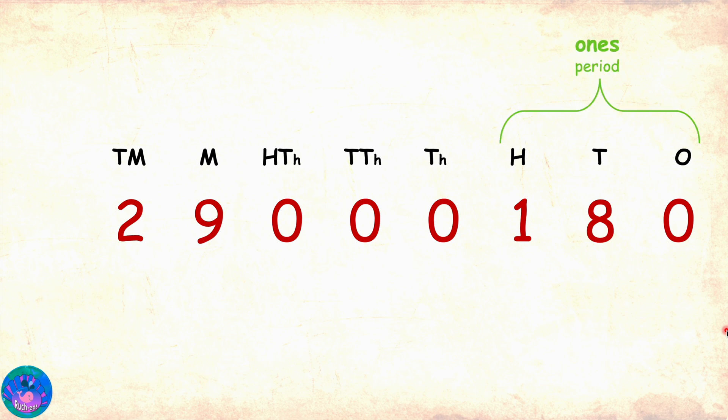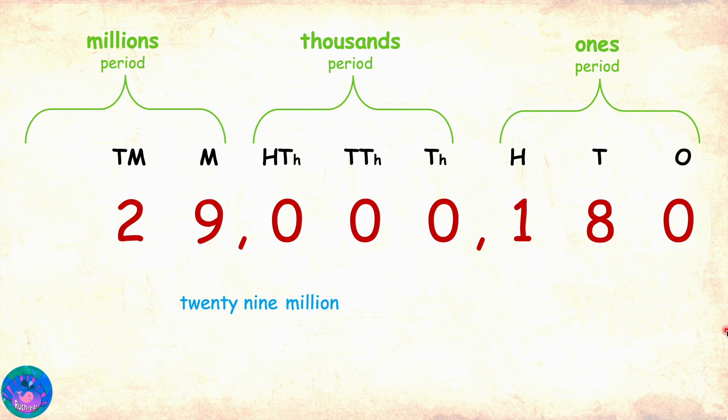So, here are the places. Ones through ten millions. Then, dividing into periods. Ones, thousands and millions. Putting comma between the periods. This number is twenty-nine million. Now, there are only zeros in the thousands period. So, I guess we can omit reading this period. Correct! One hundred and eighty. So, twenty-nine million, one hundred and eighty. Brilliant!